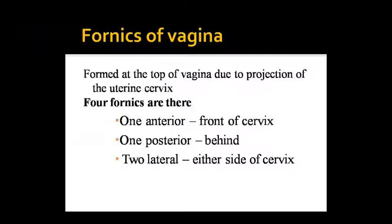The anterior fornix is found in front of the cervix, and the posterior fornix is found behind the cervix. The two lateral fornices are found on both sides.